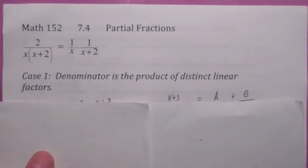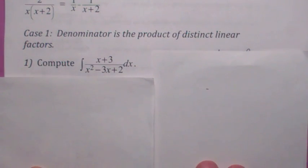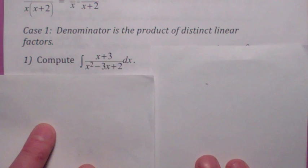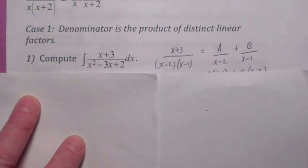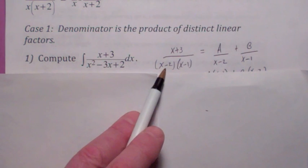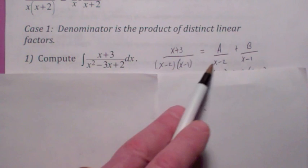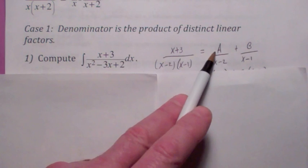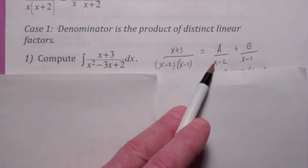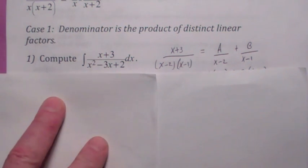There are four cases we're going to look at. In each case, the bottom has to factor. Case 1 is that the denominator can be factored into distinct linear factors — meaning none of them are repeated. So for this particular integrand, the bottom can be factored like this. We're going to write this as something over x minus 2 plus something over x minus 1. These are going to be constants because by the division algorithm, the numerator can always be written with degree less than the denominator — they're proper fractions.